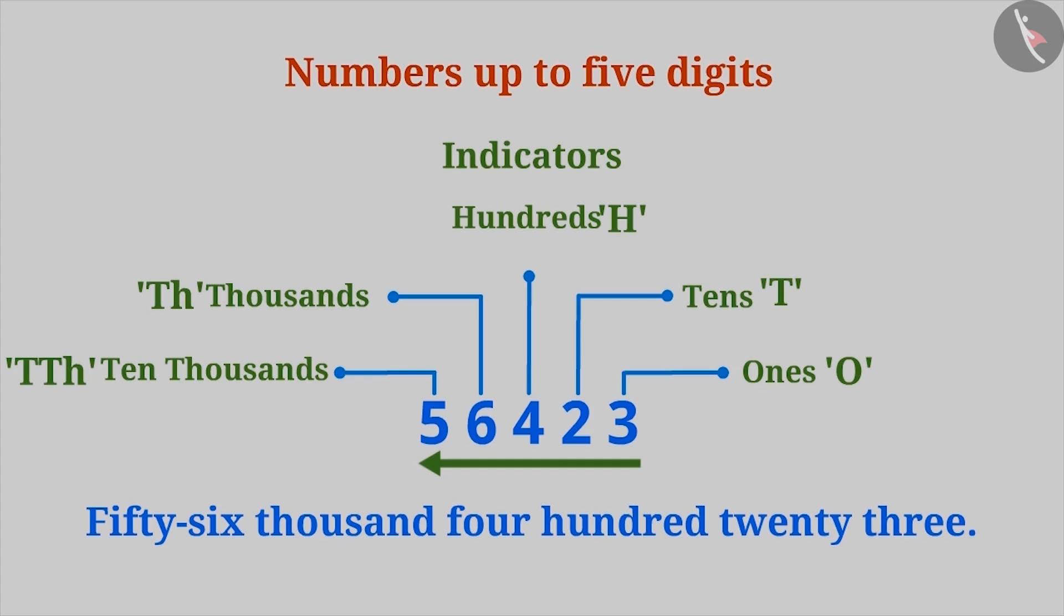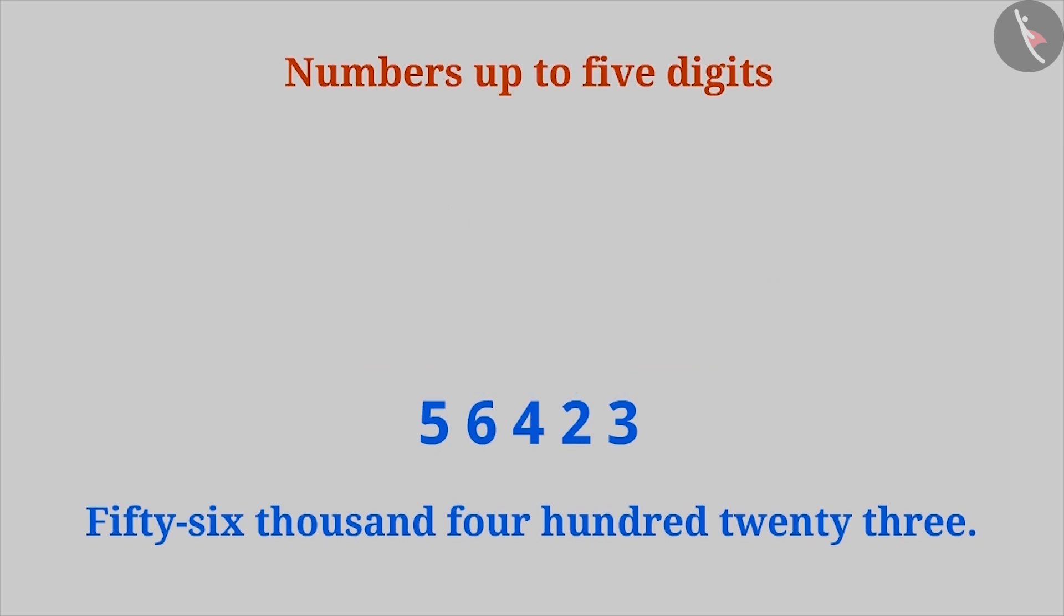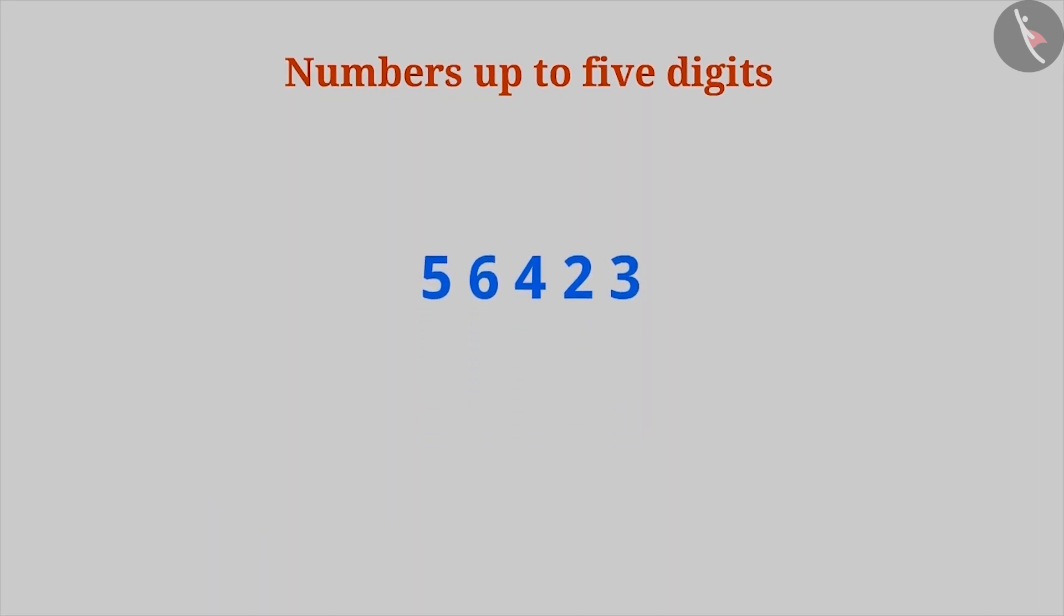Usually, numbers are written without any indicators, but that can make it difficult to read and write large numbers. Commas make it easier for us to read large numbers. Commas are used to mark thousands. For this, the first comma is placed after the third digit from the right, that is, after the hundreds place.